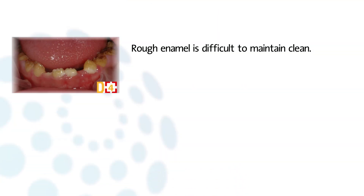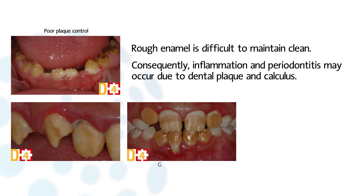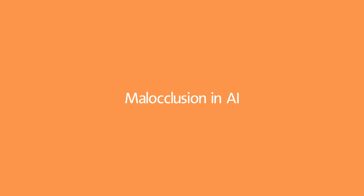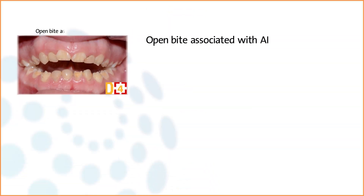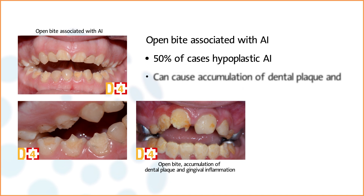Rough enamel is extremely difficult to maintain clean, and patients suffering from hypersensitivity are reluctant to brush their teeth. Consequently, gingival inflammation and periodontitis are frequent due to the accumulation of dental plaque and calculus. Anterior open bite is associated in about 50% of cases of hypoplastic Amelogenesis Imperfecta and can cause accumulation of dental plaque and gingival inflammation.